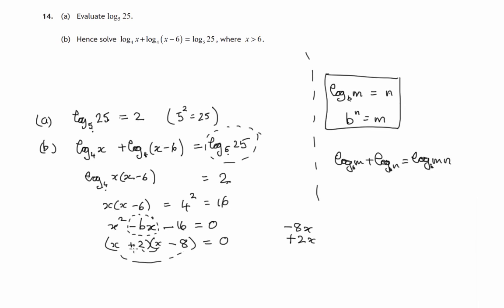So we've got two factors. x plus 2 times x minus 8. x plus 2 and x minus 8 multiply to give you 0. One or other of these two must be 0. x plus 2 equals 0, or x minus 8 equals 0. So x would be negative 2, or x would be equal to 8.